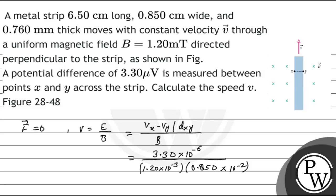Calculating: 3.30 divided by 1.20 gives 2.75, and divided by 0.850 gives 0.3235. So the answer velocity equals 0.3235 meters per second. That is the correct answer. Hope you understood it — best of luck.